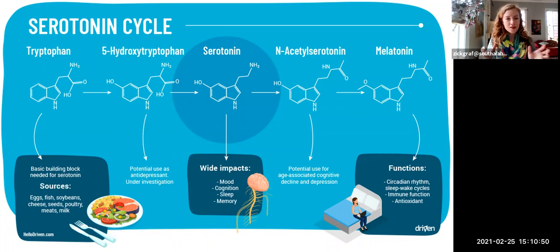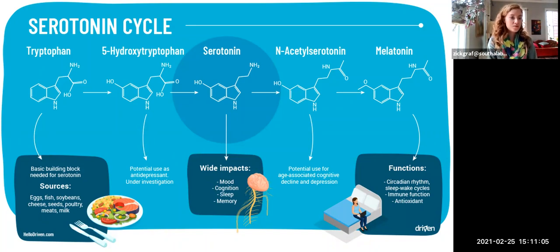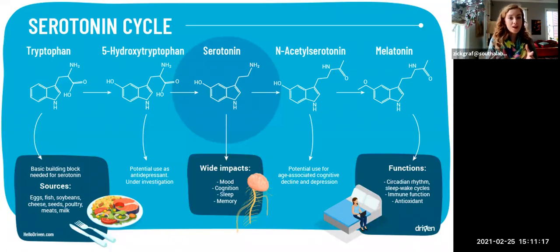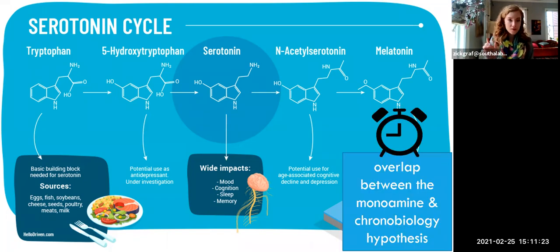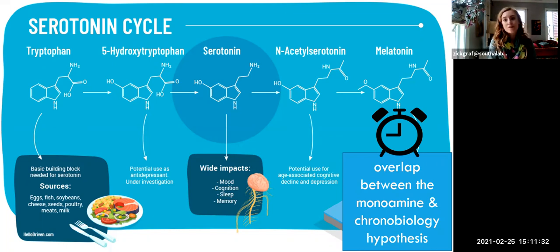Here's a quick visual of the serotonin cycle. Like all neurotransmitters, serotonin is synthesized in the body — our brains make it, and we get the building blocks from our diets. You've probably heard of tryptophan, found in turkey and other poultry, but also in eggs, fish, and especially legumes. In our digestive system, tryptophan is broken down, and then broken down further in the brain into serotonin. The ultimate breakdown product of tryptophan is melatonin, which highlights an overlap between the monoamine hypothesis and the chronobiology hypothesis of vulnerability for depression.